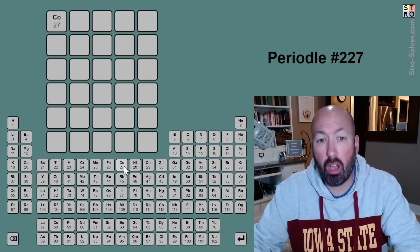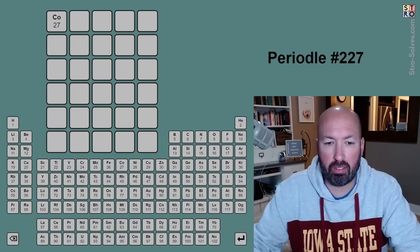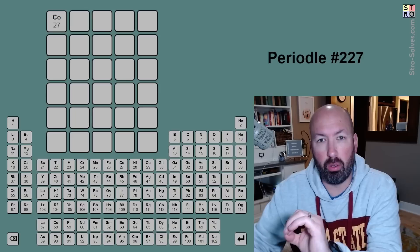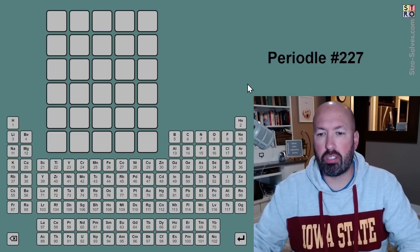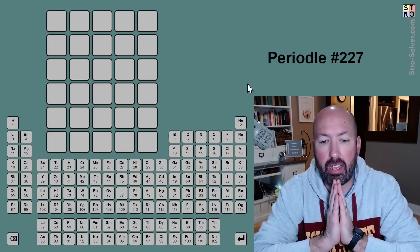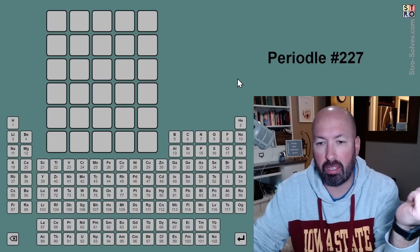Whereas, if you guess like C-O and it's gray, it only eliminates the possibility of C-O together, not all the C's and all the O's. Also, as you may recall from previously, I had trouble with the coloring on this one, since I am colorblind.